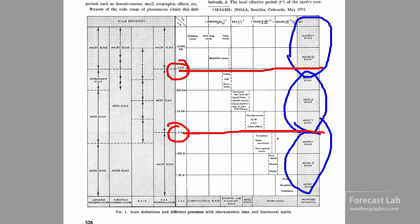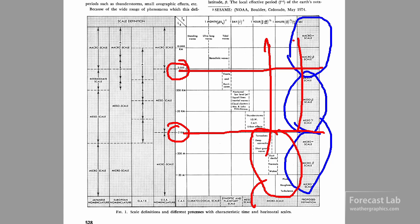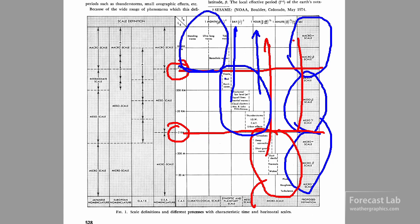Everything that was microscale had a timescale on the order of minutes to about one hour. The mesoscale processes — thunderstorms, low-level jets, squall lines — those had a scale of hours to maybe a couple of days. And synoptic scale was everything else.